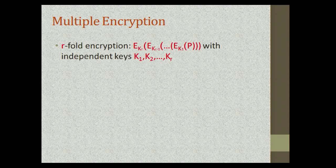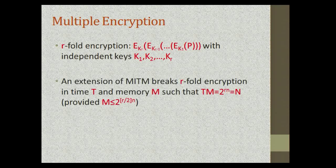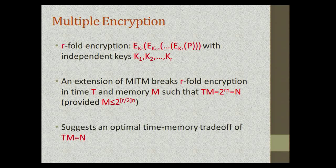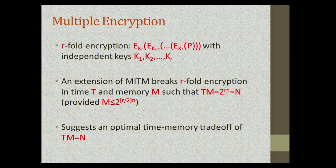In this talk we consider a straightforward generalization: the general problem of R-fold encryption, where you encrypt p using r independent keys k1 up to kr. It is very easy to adapt the meet-in-the-middle attack to attack r-fold encryption in time T and memory M such that their product equals 2^(rn) — the total number of possible keys, which we denote capital N. If you had asked most cryptographers a year ago, they would have said this is probably the best you can do with these types of algorithms.